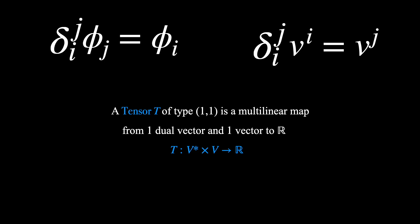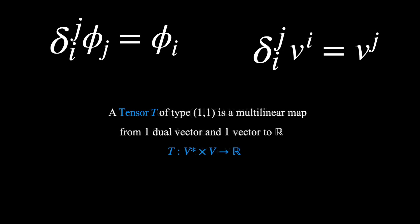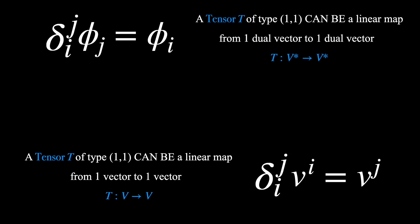And although a (1,1) tensor is a multilinear map from one dual vector and one vector to the real numbers, it also can be a linear map from either one dual vector to one dual vector, or from one vector to another vector. The only caveat is that it must be defined consistently with the multilinearity property of tensors.